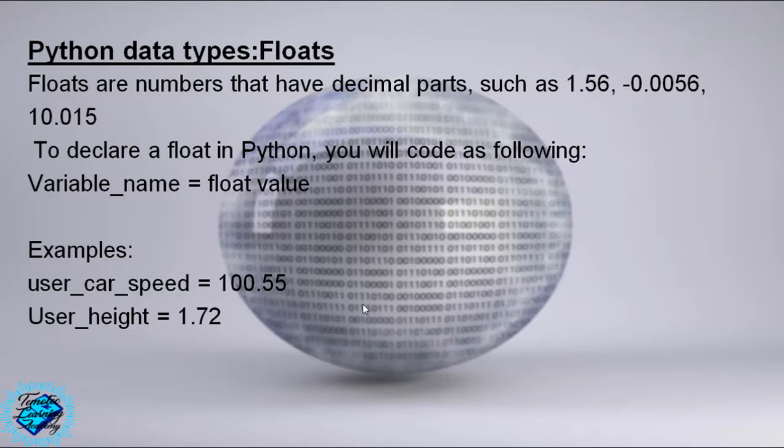Python data types: floats. Floats are numbers that have decimal parts, such as 1.56, -0.0056.